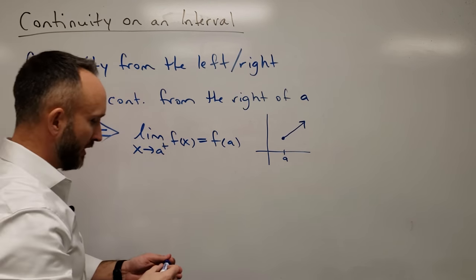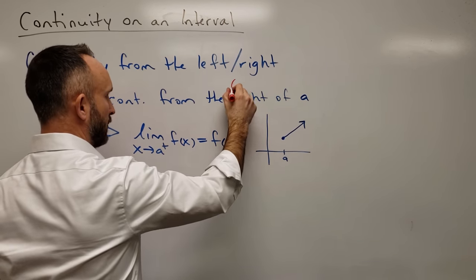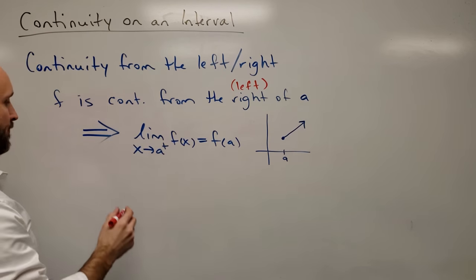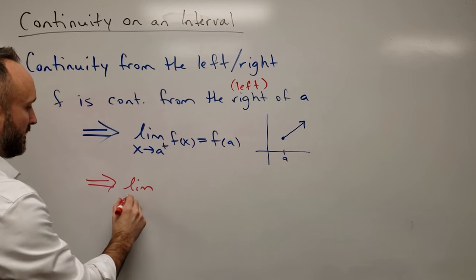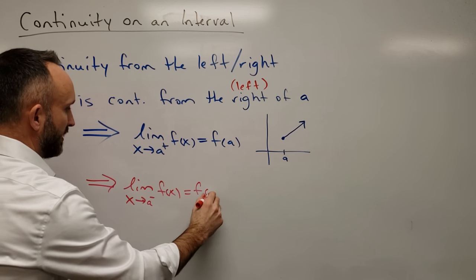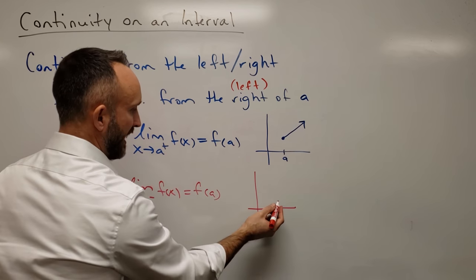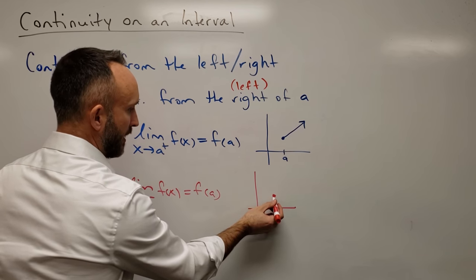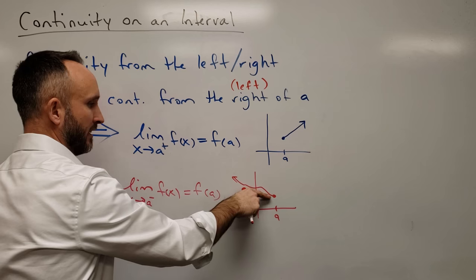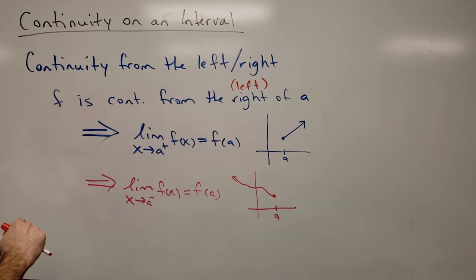Similarly, f is continuous from the left of a if the limit as x approaches a from the left equals the output at a. You can imagine a similar type of graph: if this is a, then maybe the graph does something like this. As x approaches a from the left, we keep getting infinitely close to the actual output at a. That's left and right continuity — no big deal — but it is key to understanding continuity on intervals.